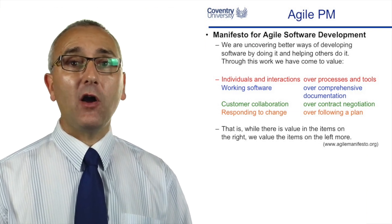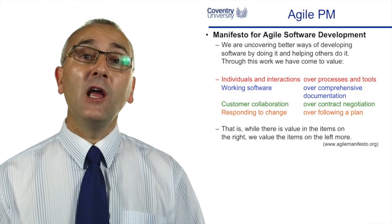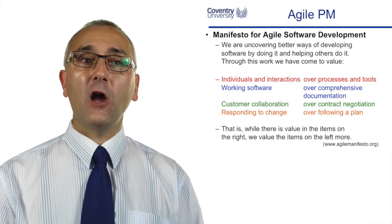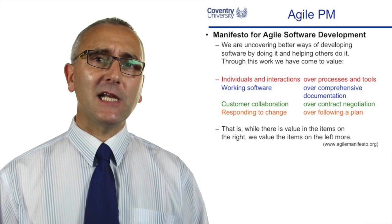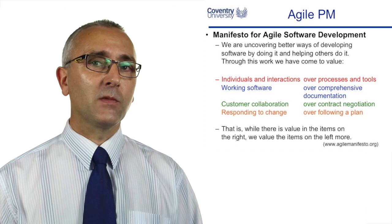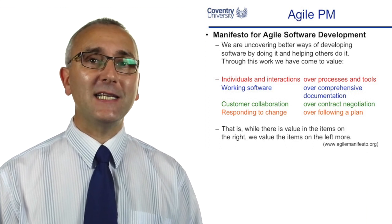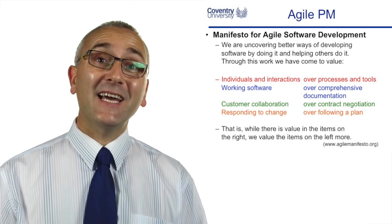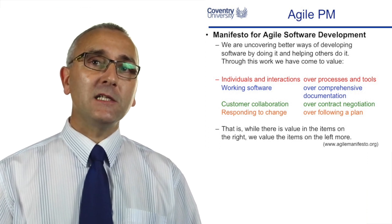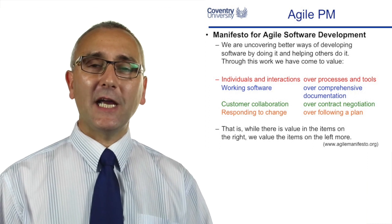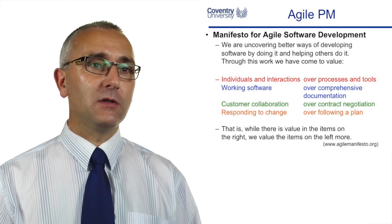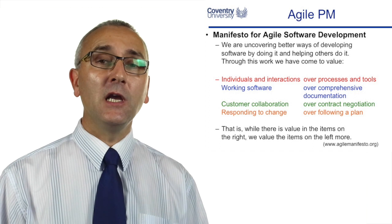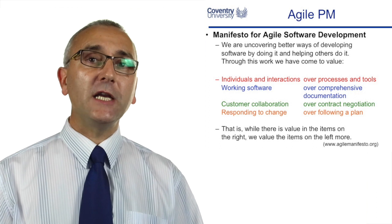Essentially, the agile manifesto is about finding better ways of developing software and helping people develop software. Individuals and the interactions between people are valued more than processes and tools. Working software is far more important than documentation — showing a bit of working software is better than having a 100-page user requirements document. Collaborating with your customer is much more value-added than sitting down in a contract negotiation-type meeting. And rather than following a plan for the sake of it, welcome change, because if the customer wants change, it's for a business reason.